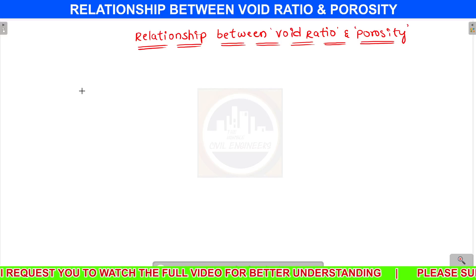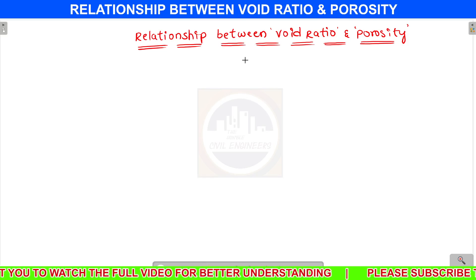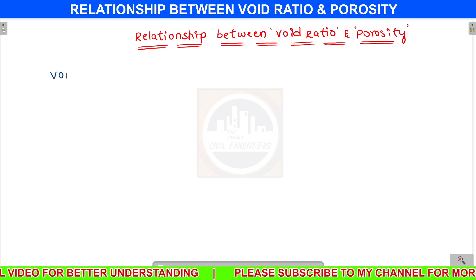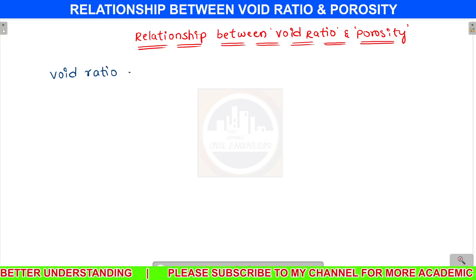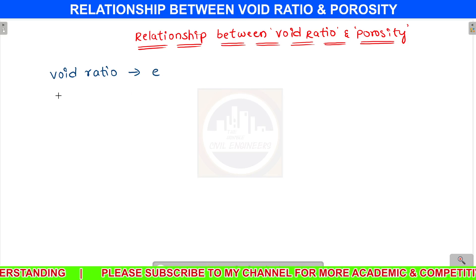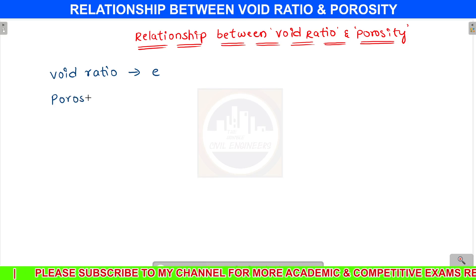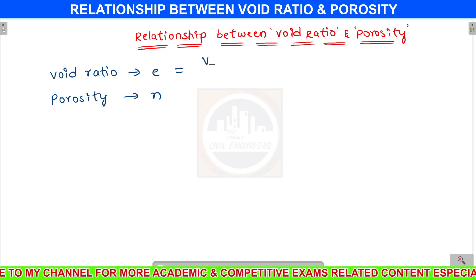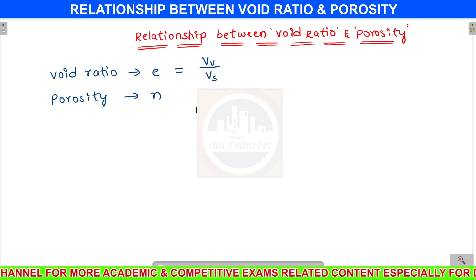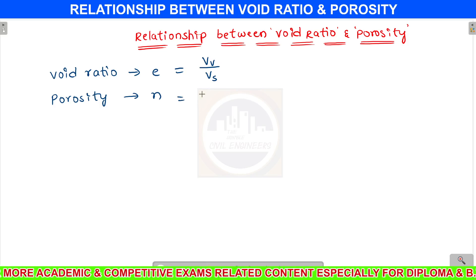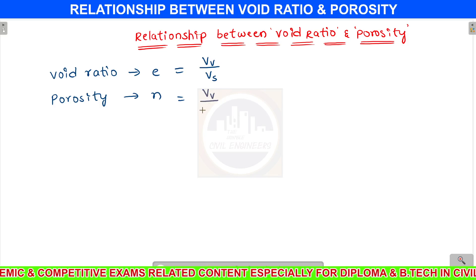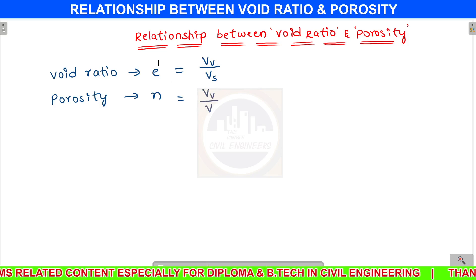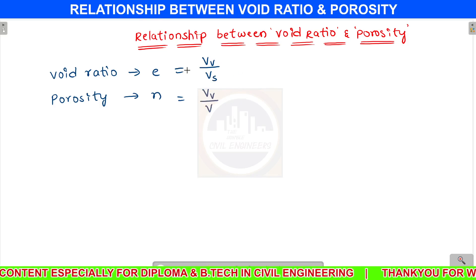Hello guys, in this video I am going to discuss the relationship between void ratio and porosity. The notation for void ratio is e, and porosity is denoted by n. Void ratio is the ratio of volume of voids to the volume of solids. Porosity n is equal to volume of voids divided by total volume.